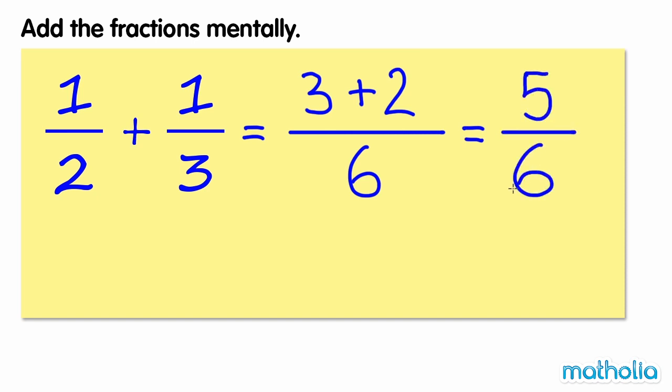5 sixths is in its simplest form. So 1 half plus 1 third is equal to 5 sixths.